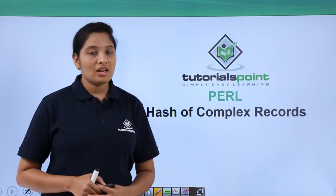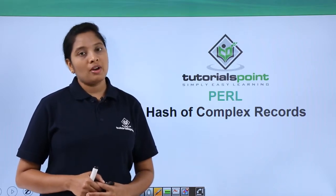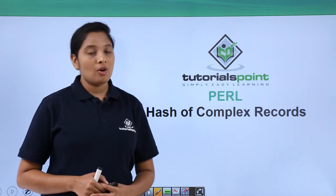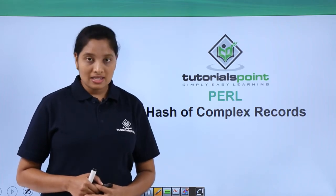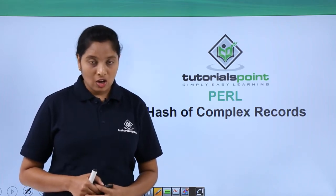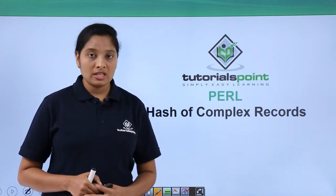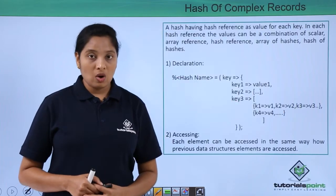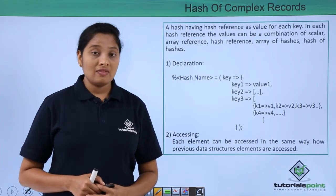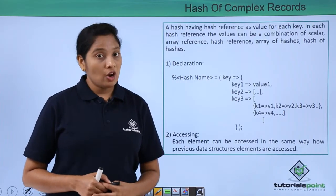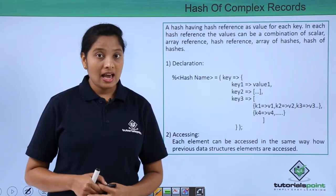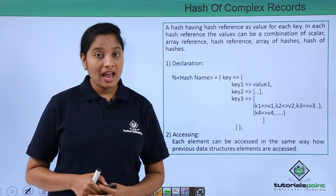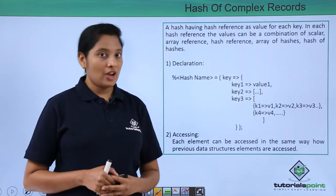Hello friends, welcome to TutorialsPoint. In this video let us discuss about the last data structure called a hash of complex record. This record is a hash having array of arrays, hash of arrays, array of hashes and hash of hashes.